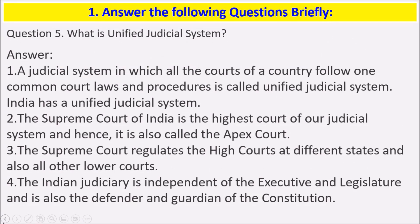Next: what is a unified judicial system? A judicial system in which all the courts of a country follow one common court law and procedure is called a unified judicial system. India has a unified judicial system. The Supreme Court of India is the highest court of the judicial system and is also called the apex court.